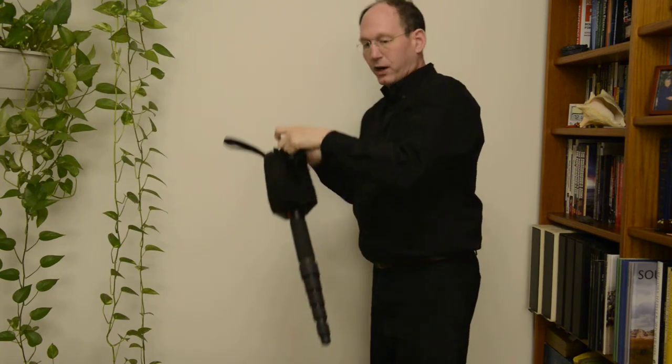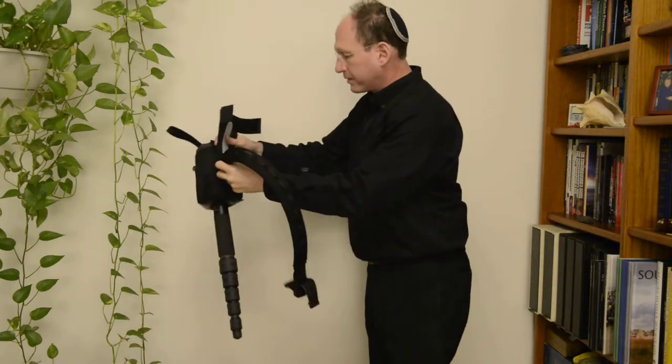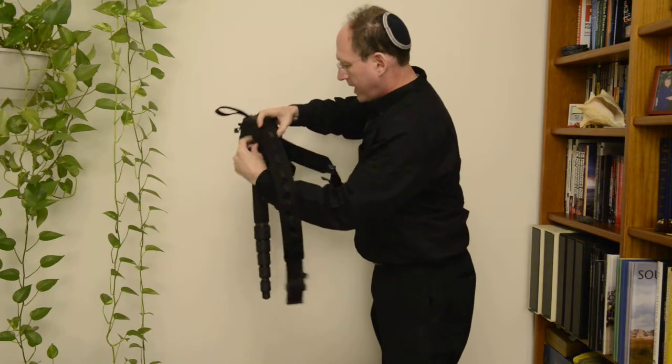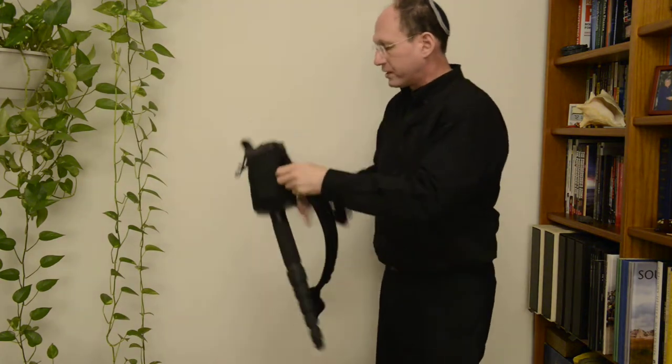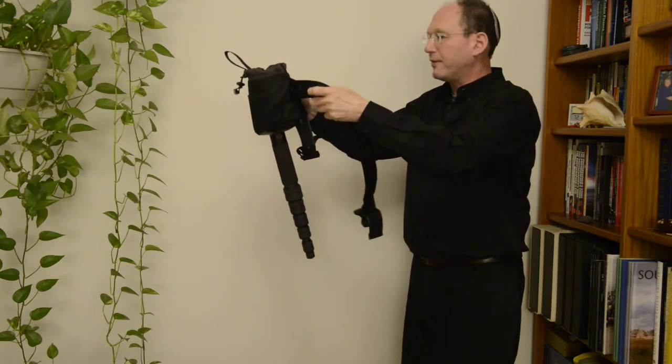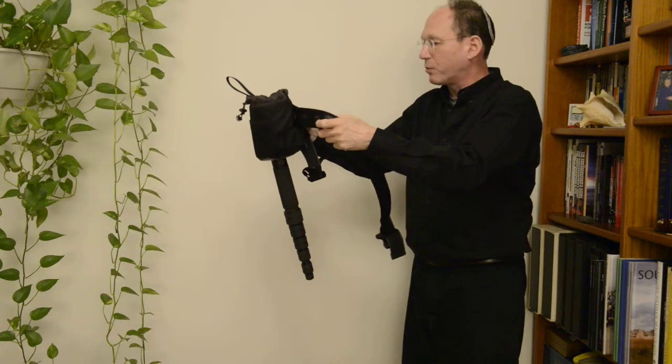As you well know, if you have a Think Tank Photo belt system, it goes on the belt. What's really nice about this is it doesn't flop around. It just holds it right in place fairly sturdily. I've used this at an event already and it worked great.